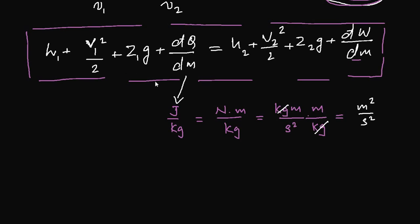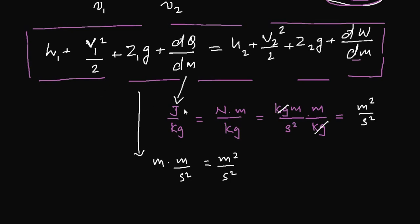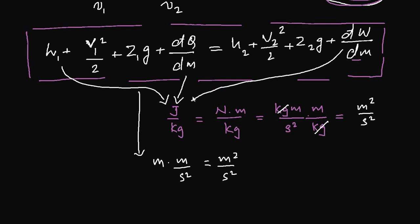Converting z·g to m²/s² is straightforward: z1 is in meters and g is in m/s², giving m²/s². You already know V1²/2 is the same. Enthalpy is also J/kg, which we've shown equals m²/s². Similarly, work per mass (dw/dm) is J/kg — since heat and work share the same unit (joules) — and therefore also equals m²/s². Every term in the equation shares the same unit.